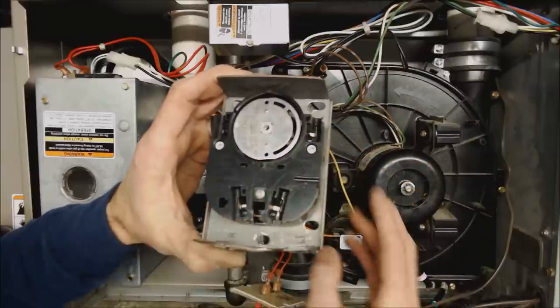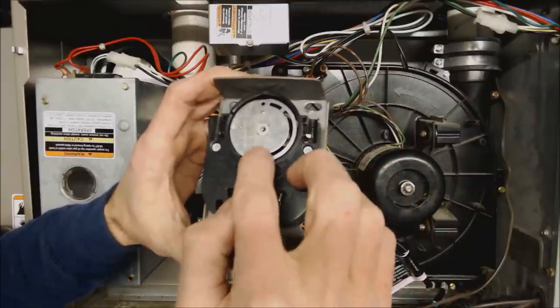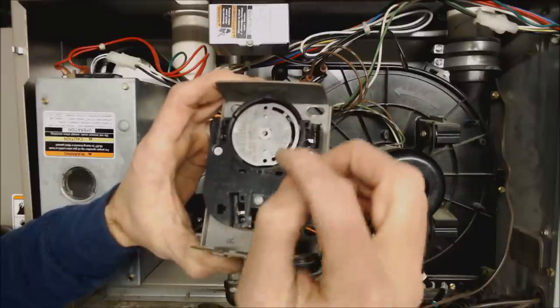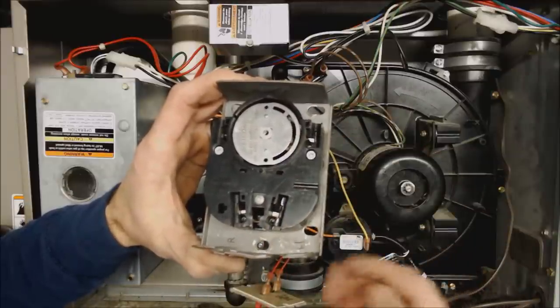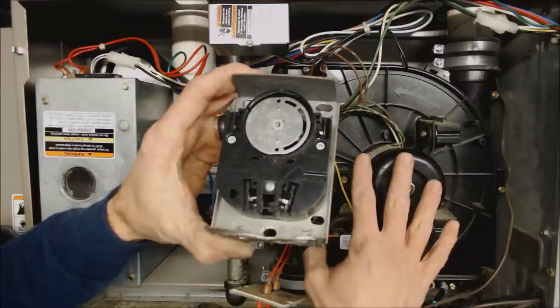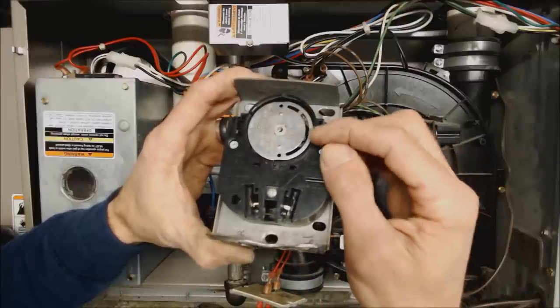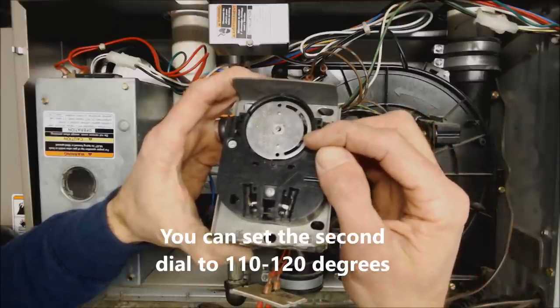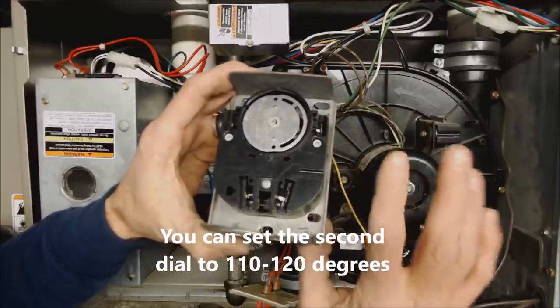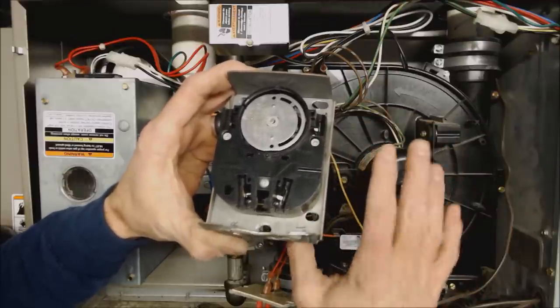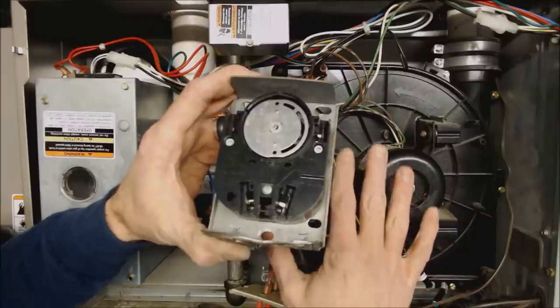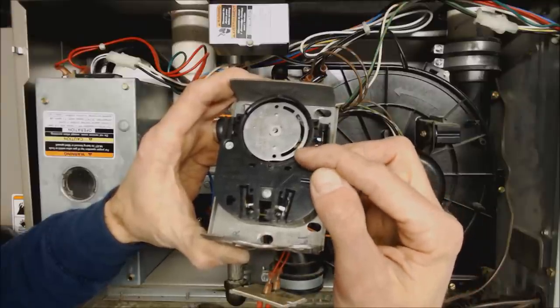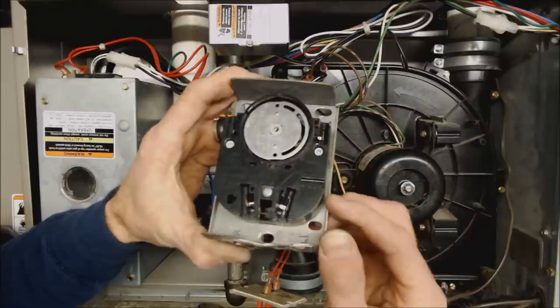So when your furnace is heating up, it's going to turn this dial right here and it's going to turn the blower motor on at say at 120. So when the ignition system is heating up the heat exchanger, the blower motor won't turn on until say 120 degrees. Then, when the thermostat is satisfied and the ignition system kicks off, the blower motor is still going to cool down the heat exchanger and it shouldn't shut off until 85 or 90 degrees.